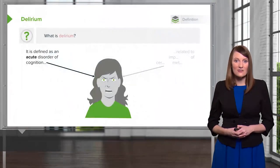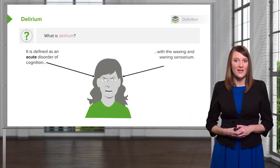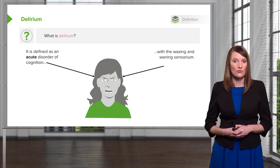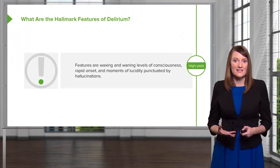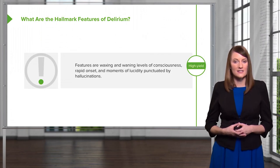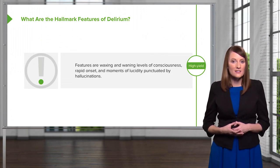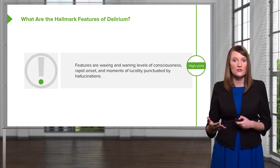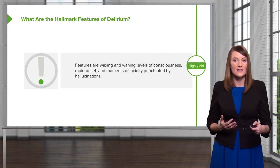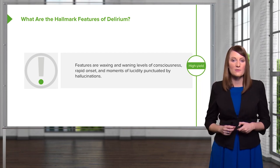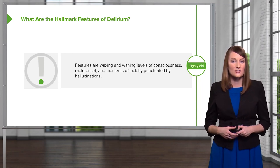Let's take a moment to talk about delirium, one of the cognitive disorders. Delirium is defined as an acute disorder of cognition. It's really defined by the waxing and waning of one's sensorium. What that means is that there's rapid onset and there are moments of lucidity during delirium. Sometimes a patient's going to stay with you, other times they won't, and these moments of lucidity can also be punctuated by hallucinations.